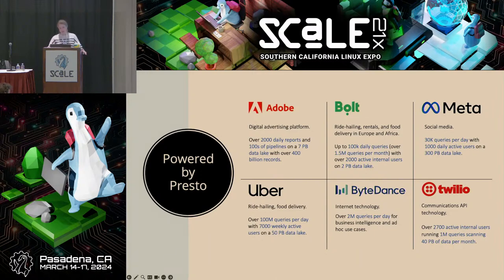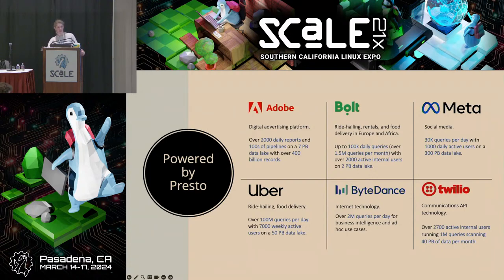Here's a sampling of notable companies that use Presto — particularly Meta, which has one of the largest data lake houses in the world and uses Presto in several different flavors with clusters tuned for different use cases. Also Uber, ByteDance, Adobe, and others. With the nature of open source, these companies are also really good at contributing back to Presto, and we've certainly benefited from that.